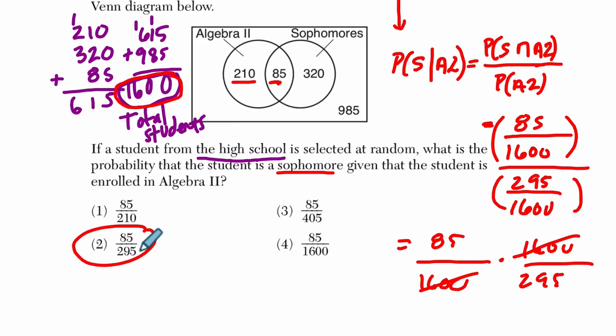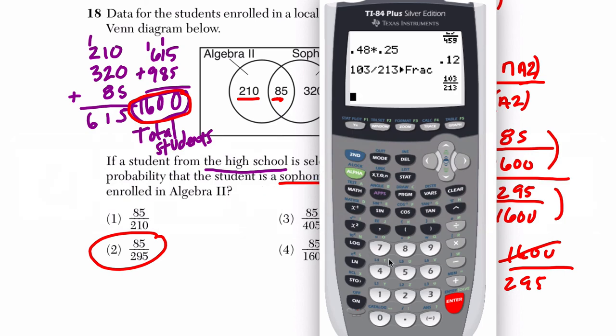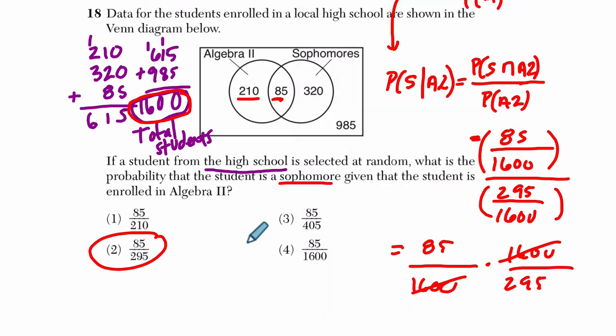Now, let's just say for a moment you had to reduce that fraction. Let's remember what you would do. So you would enter 85 divided by 295, and if you hit math and fraction, boom, you can reduce the fraction to 17 over 59 in case you had to do that. All right, well, I hope this helped.